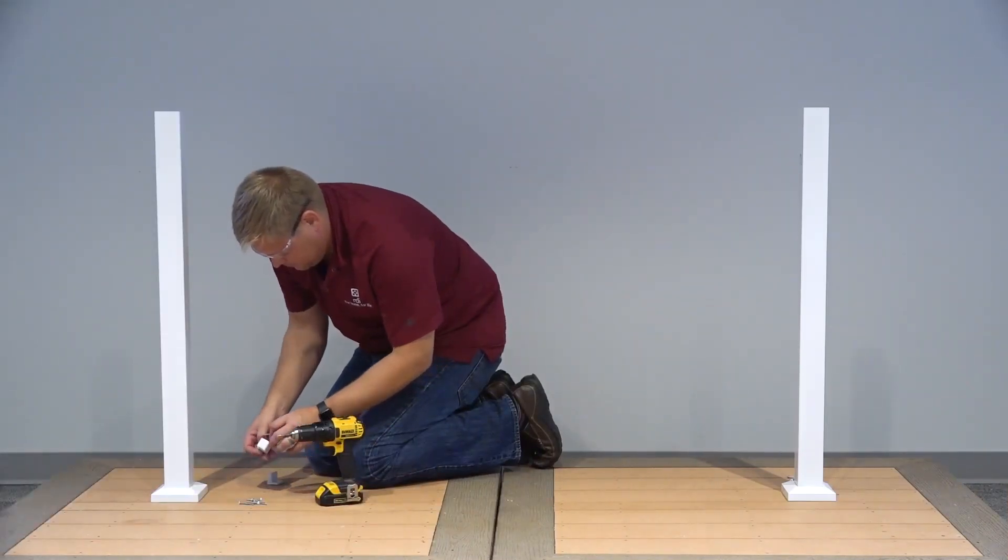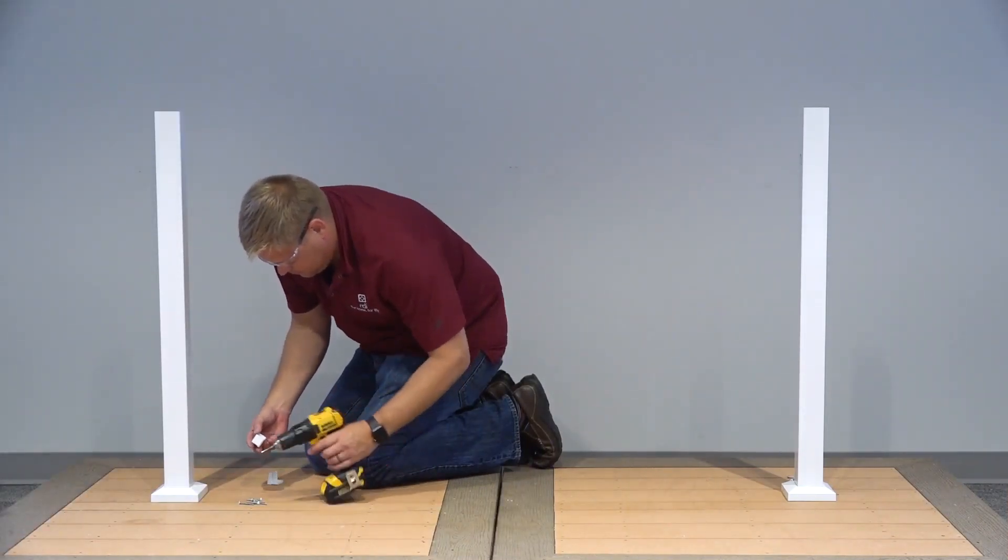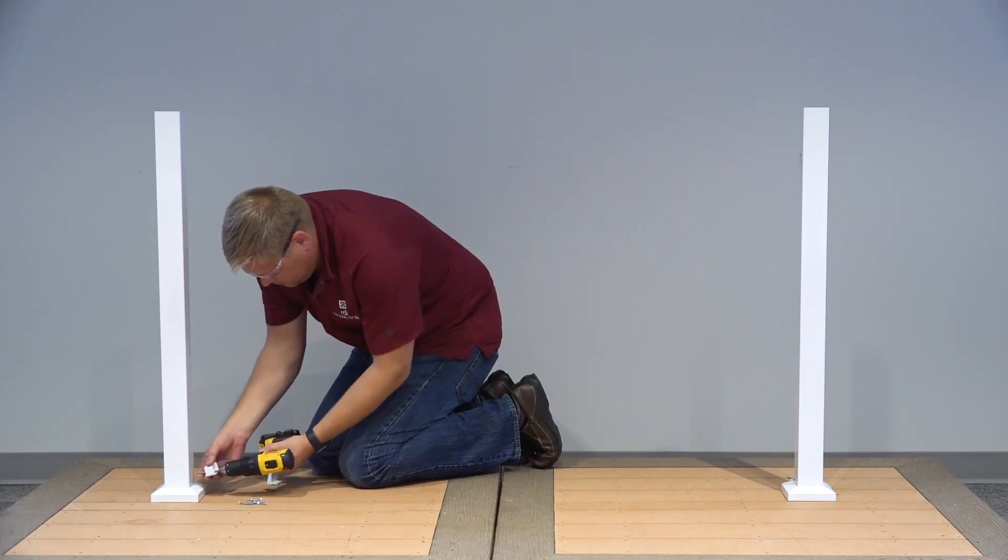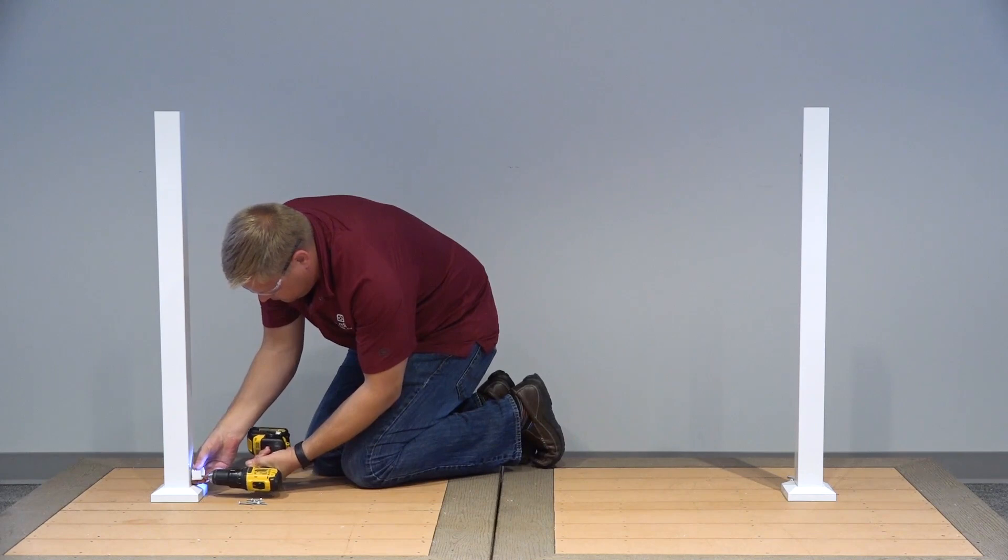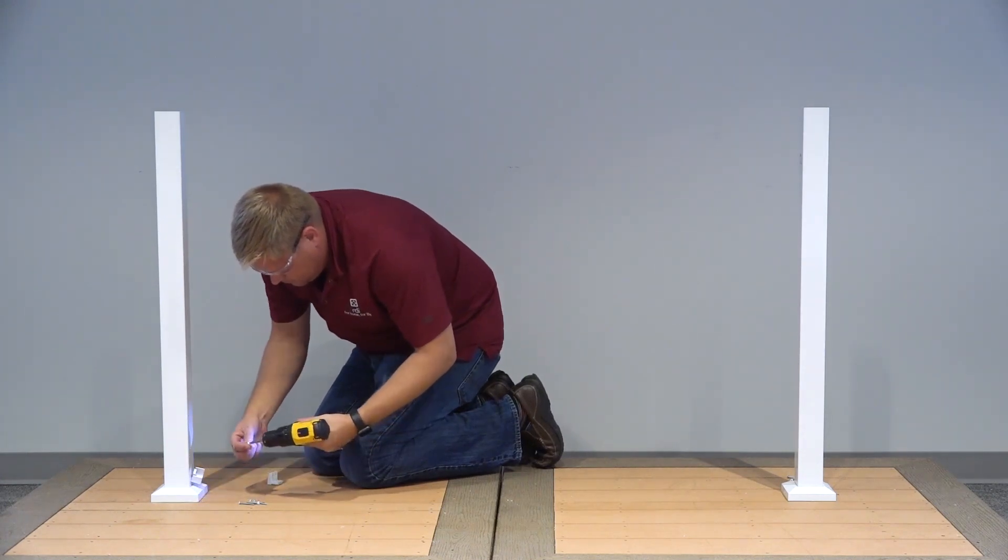Next, align the brackets onto your post with the holes, ensuring that the brackets are square, and fasten the brackets into place using the 1 1/2 inch screws provided. Repeat this on your other post.